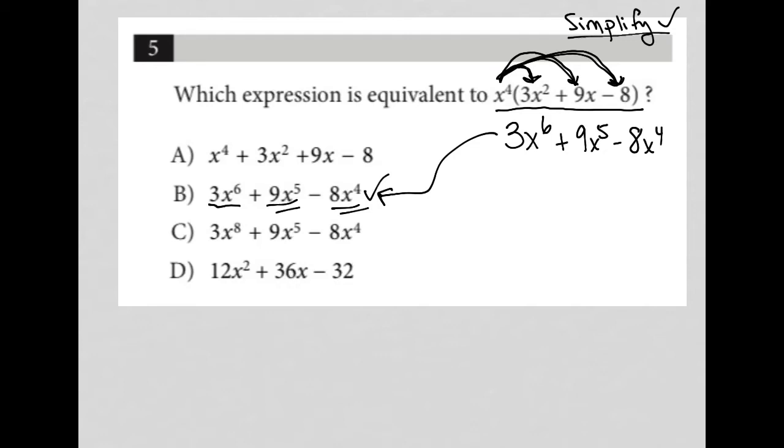Now, if you thought that choice c was the correct answer, right? We have the 9x to the fifth. We have the minus 8x to the fourth. The only real difference between b and c is the eighth power here versus the sixth power.